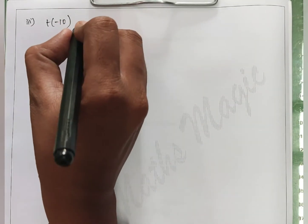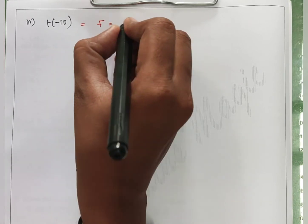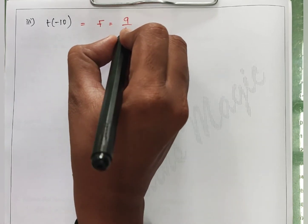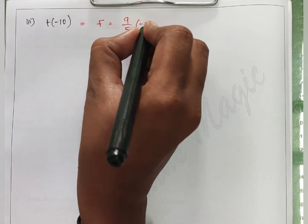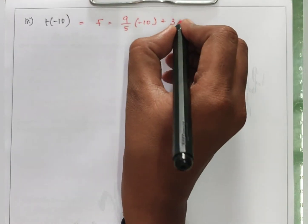Now Celsius is minus 10. So Fahrenheit equals 9 by 5 into minus 10 plus 32.